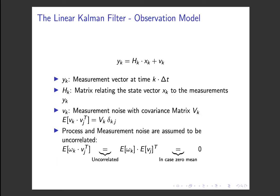Then we have the observation model of the linear Kalman filter. As I said, we cannot directly measure the state vector x. We can measure certain observables, which are collected in the measurement vector y. These observables are related to the state vector by the observation matrix H. Of course, our measurements are not perfect, so we need to take into account measurement noise, called V_k — the measurement noise vector. The measurement noise is uncorrelated to the process noise.